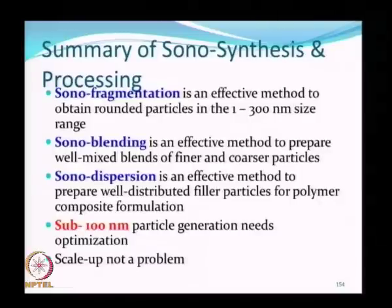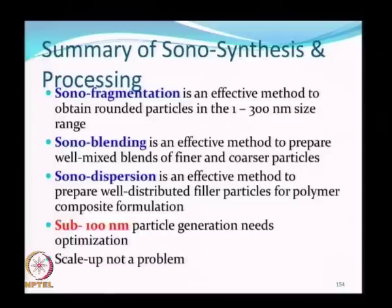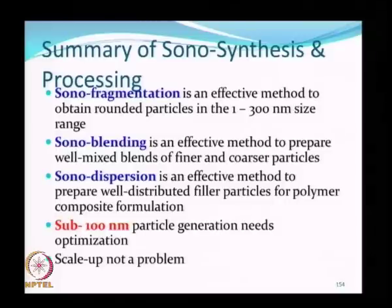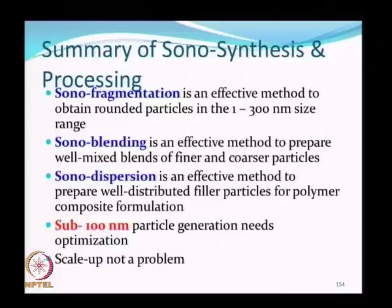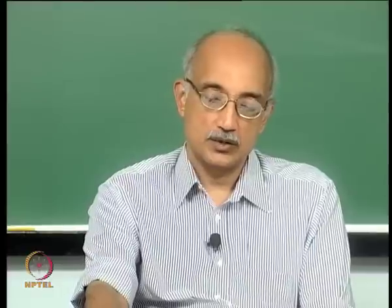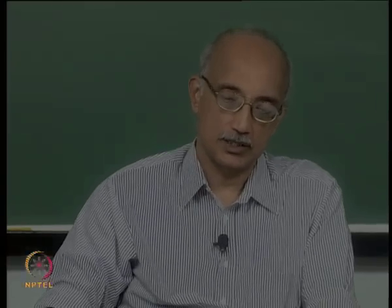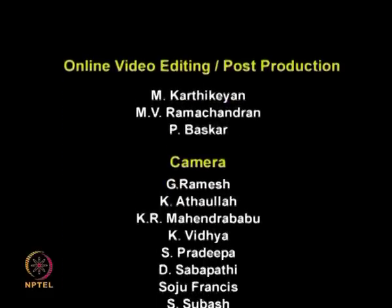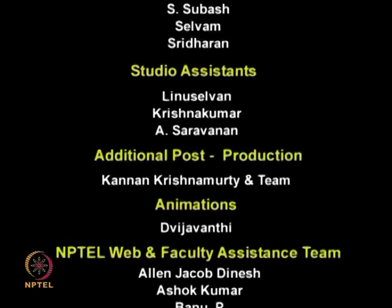To summarize: SONO synthesis and processing offers several advantages. Sonofragmentation can produce well-rounded particles in the 1 to 300 nanometer size range. SONO blending is an effective method to disperse these particles, and SONO dispersion is an effective method to prepare polymer composites of very uniform properties. Sub-100 nanometer particle generation still needs optimization, but scale up is not an issue. One of the big advantages is that increased concentrations actually increase fragmentation efficiency. In the next lecture, we will particularly focus on the properties of nanoparticles and how to characterize them.